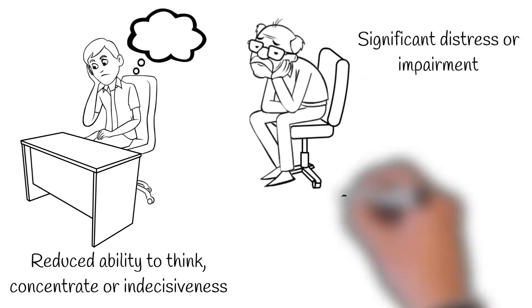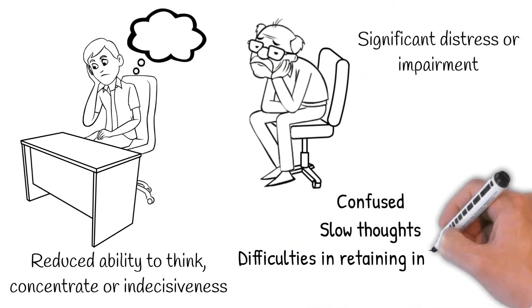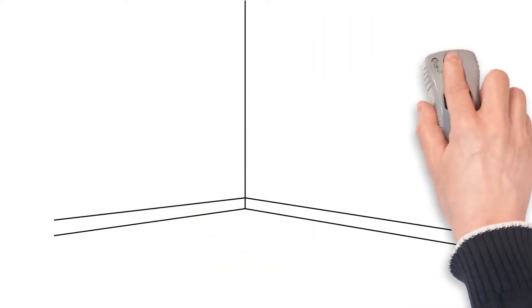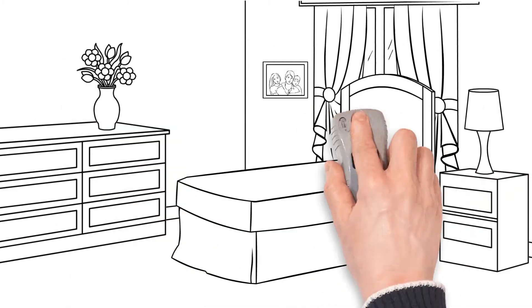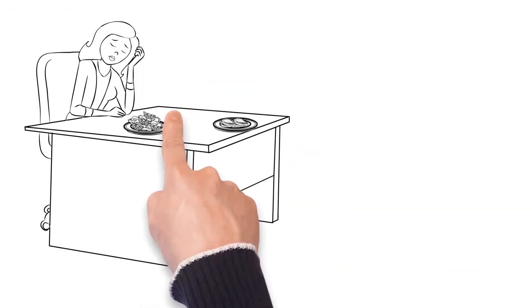Depressed people often report confused or slow thoughts and difficulties in retaining information. Other symptoms such as changes in sleep or appetite can also be present.